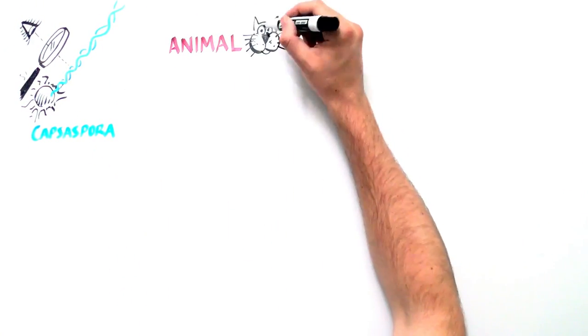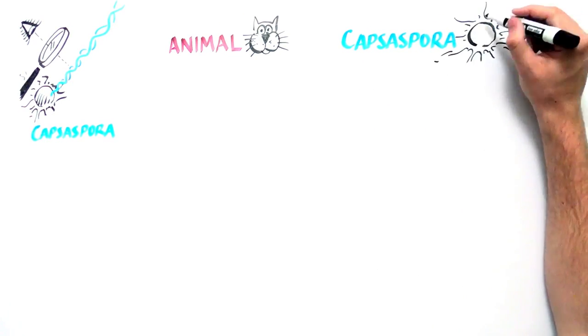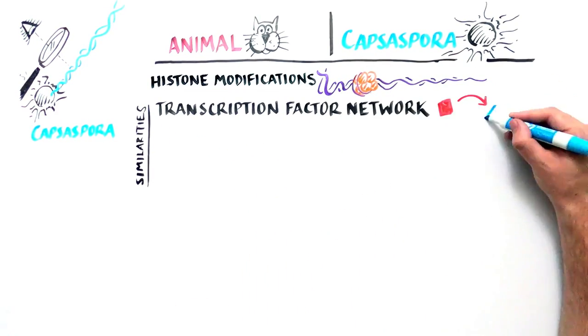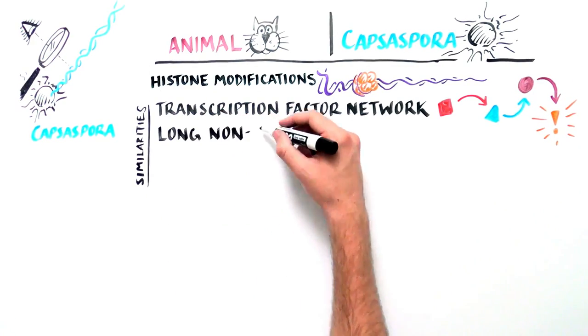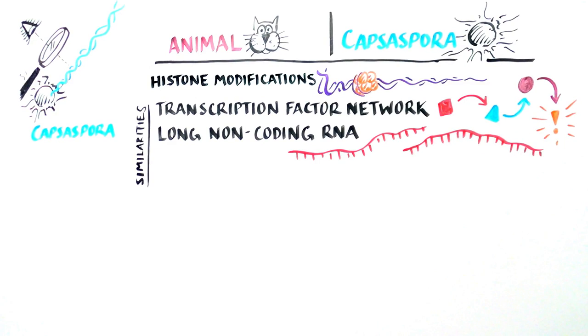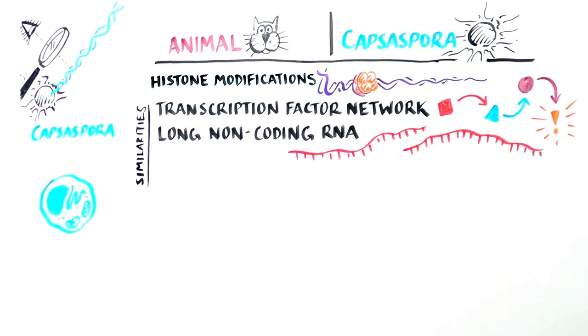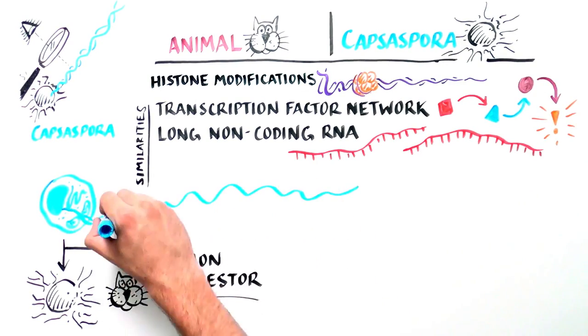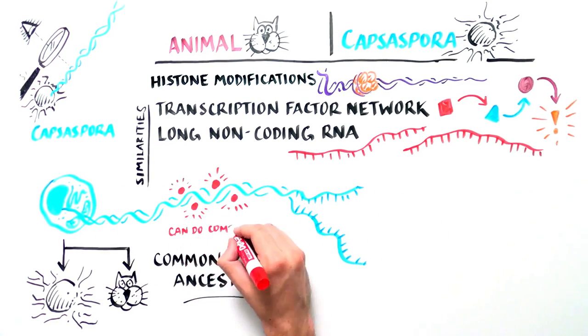The analysis revealed several key similarities and differences between genome regulation in single-cell amoeba and animals. The primary similarities include the presence of histone modifications, conserved transcription factor networks, and regulatory pieces of RNA, all of which are important for determining whether genes are activated or repressed. These findings indicate that the common ancestor was already capable of complex genetic regulation.